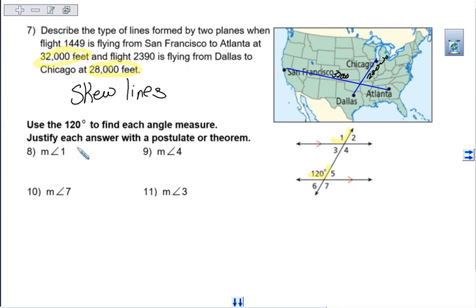Next up, we want to use that 120 degree angle for all four of these problems and justify why you can say you know those angles. First one, angle one. One's outside, one's inside. Angle one is 120 degrees because those are both obtuse angles and they're corresponding angles.